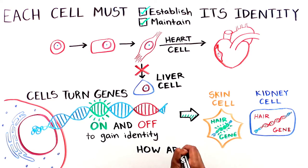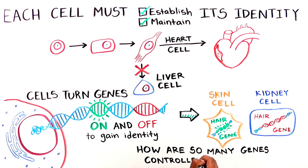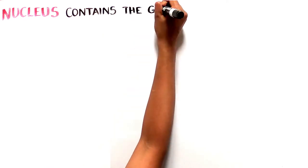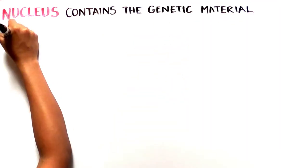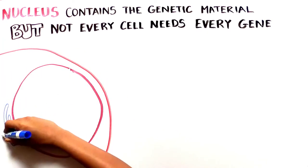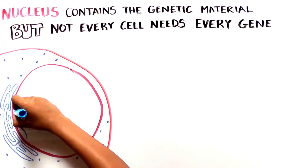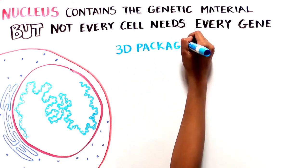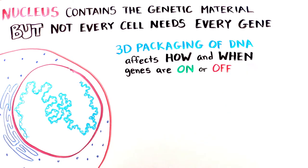But we don't fully understand how so many genes are controlled and maintained in such a coordinated way. Scientists believe one way genes are controlled is by how the DNA organizes itself in the nucleus. The nucleus contains most of the genetic material needed by a cell, but not every cell needs access to all the genes. Some recent data suggests that how DNA is packaged in three dimensions in the nucleus might affect how and when genes are turned on or off.